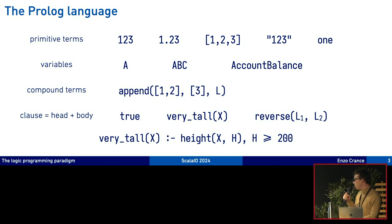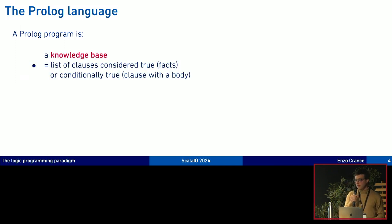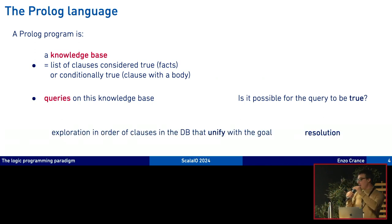A program in prologue will be a knowledge base first, a list of clauses we consider true. So we will call them facts or they can be conditionally true if we use a body. And then we'll do queries on this knowledge base, ask the system is it possible for this query to be true in the world we declared before? And then we will explore in order all the clauses declared in the database and only the ones that unify with the query and then find whether the query can be made true.